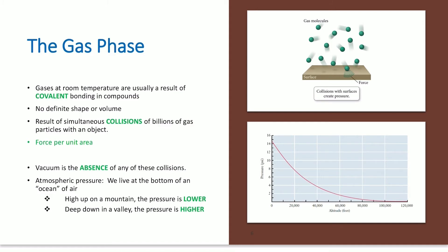Atmospheric pressure. Let's say we live at the bottom of an ocean of air. Higher up on the mountain, the pressure is lower. Deep in the valley, the pressure is higher. The gas molecules themselves are constantly moving. When they hit the surface, they apply a force. The collisions with the surfaces create the pressure that the gas is being reported for. Higher up, lower pressure. Deeper down, higher pressure.